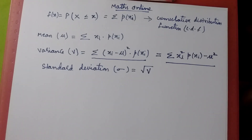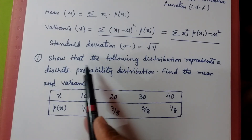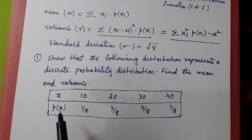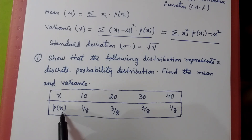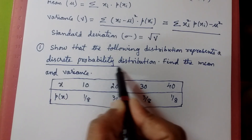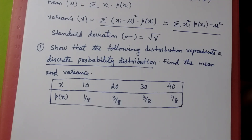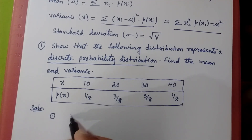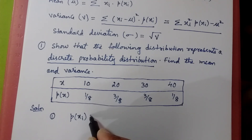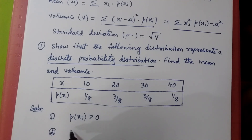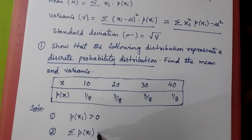Let's take a few examples based on probability distribution. The first question is: show that the following distribution represents a discrete probability distribution, and find the mean and variance. The values of x and corresponding probabilities p of x are given. For a discrete probability distribution, two conditions must be satisfied: first, p of xi should be greater than zero; second, the summation of p of xi should equal one.